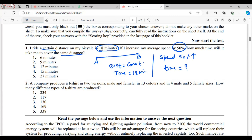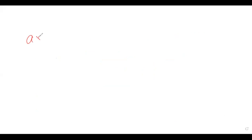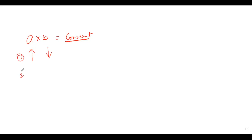This is a very conceptual question, so the background concept is needed. If the product of any two numbers is constant, and if we increase one quantity, then to keep it constant the other quantity should be decreased. Similarly, if the first quantity decreases, the second should increase to keep the product constant.